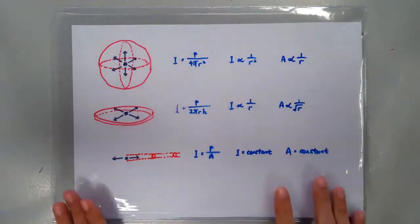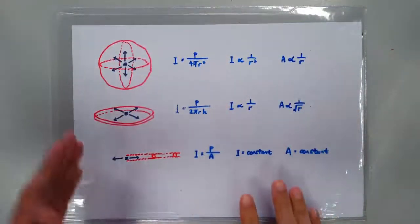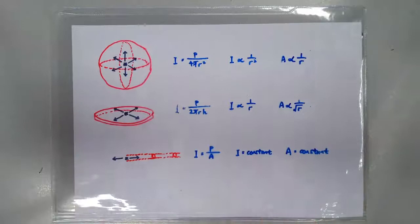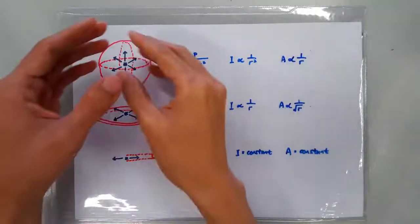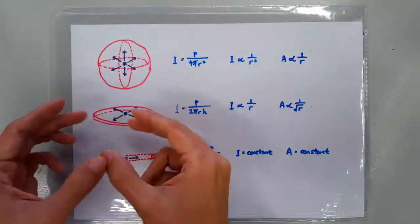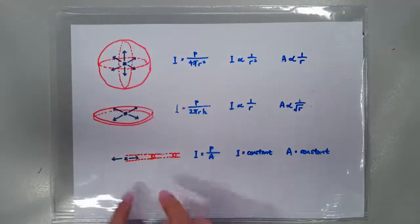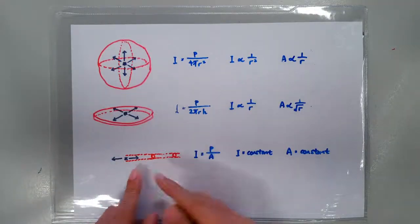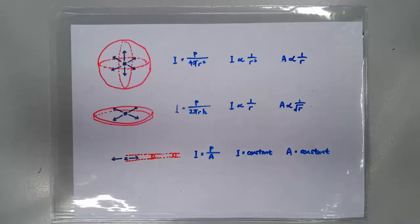So there you have it. You have different formulas depending on whether it's a 3D, 2D, or 1D wave source, depending on whether the power is spread over a larger and larger spherical area, or a cylindrical area, or the area doesn't spread at all. Okay, that's all. Ta-ta!